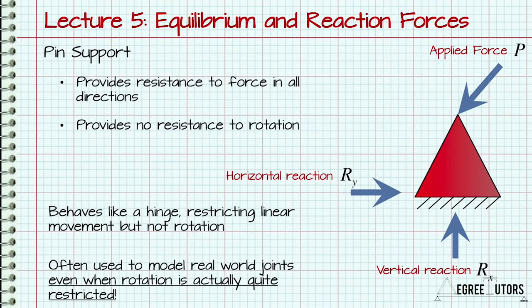A pin support is similar to a roller in that it restricts vertical movement of the structure by supplying a vertical reaction. It also allows free rotation, just like a roller support, so no reaction moment can be generated. However, unlike a roller support, pin supports also restrict horizontal movement and therefore can generate a horizontal reaction. You can think of pin supports as behaving just like hinges, restricting linear motion but allowing rotation.